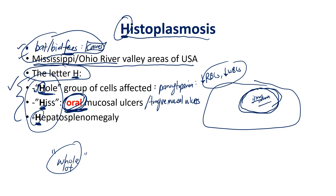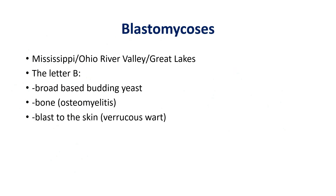Key summary for histoplasmosis: exposure to bat or bird feces, often from cave exploration. Common in the Mississippi and Ohio River Valley — think Illinois, Michigan, lower New York, Pennsylvania. Mnemonic using H: whole group of cells affected (pancytopenia), hissing snake (oral mucosal ulcers), and hepatosplenomegaly (large liver and spleen).